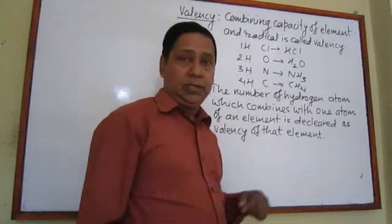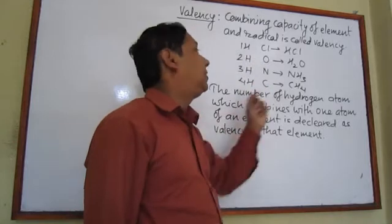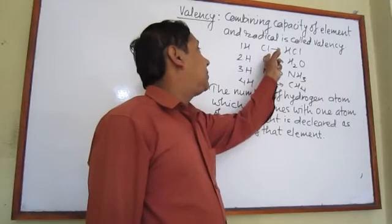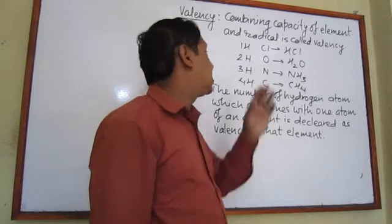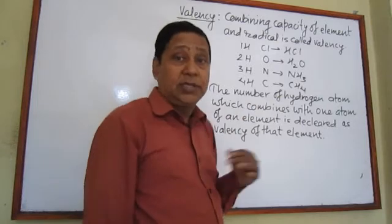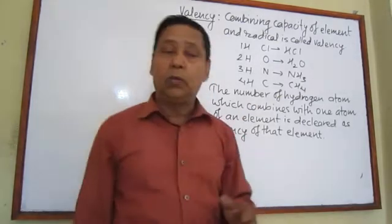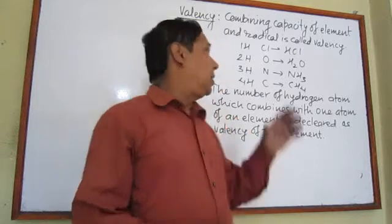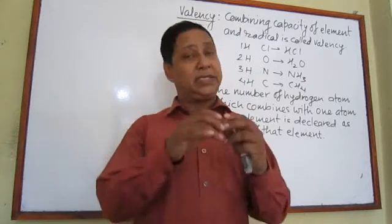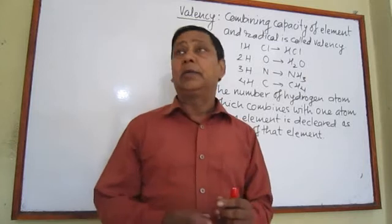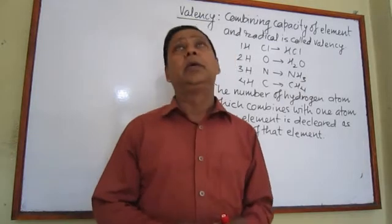Looking at this, we are now confused. What is the confusion? The combining capacity of chlorine seems to be one compared with hydrogen, but the combining capacity of hydrogen seems to be differing across elements. That is why, since hydrogen is the simplest element, the valency of hydrogen is declared as one.